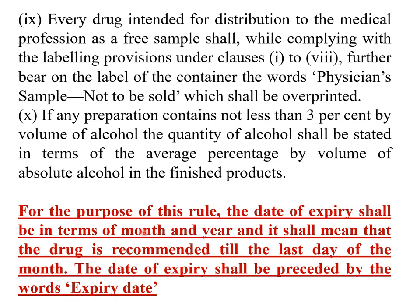Yet one more important point: in the previous slide I showed you example labels where the manufacturing date was given as 04-06, which is month and year. The date of expiry shall be in terms of month and year, meaning the drug is recommended till the last day of that month. For example, if a formulation's expiry date is given as June 2021, you can still use it safely till 30th June, after which it is not recommended.